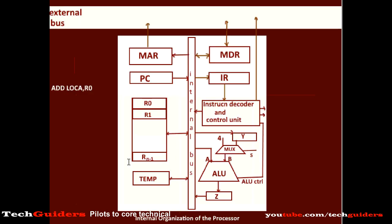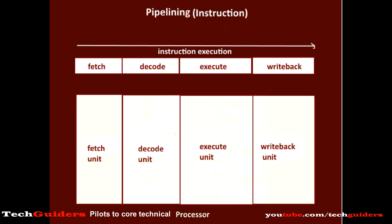By viewing this kind of basic organization we can see there are a lot of dependencies structure-wise, data flow-wise and control flow-wise. Even then, if we are able to organize this hardware or the combinational circuit into independent sub-units